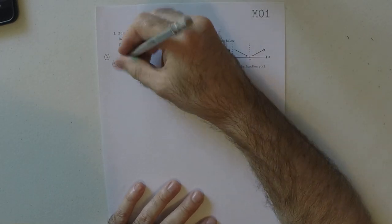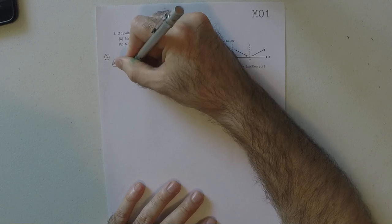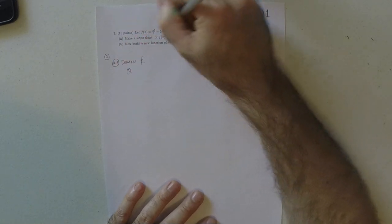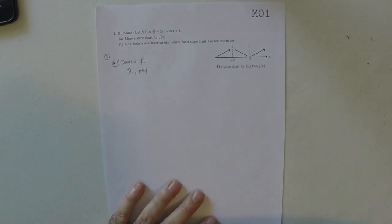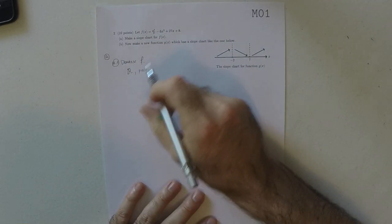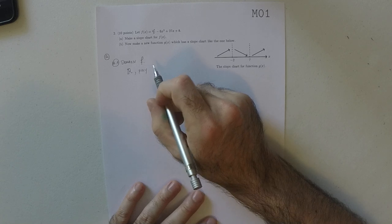Well, it's going to be the reals because F is a polynomial. So that just means that nothing is excluded on account of domain.